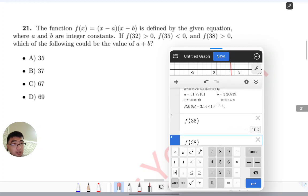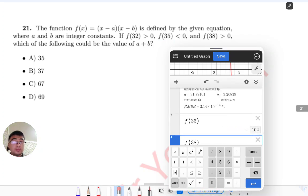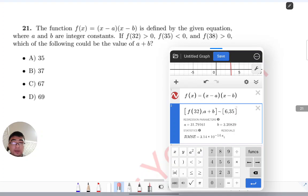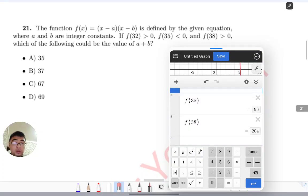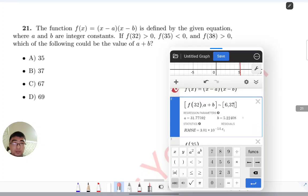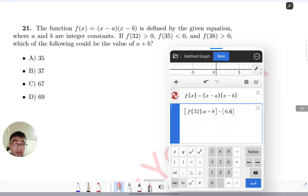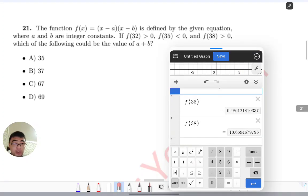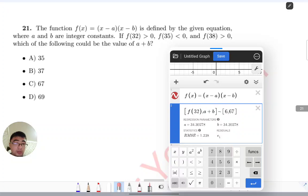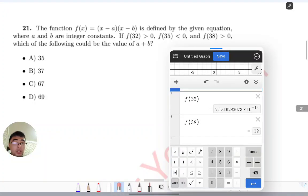f(38) is positive, but f(35) is not negative when it should be negative. Let's check option B: 37. Still doesn't satisfy us. 67, still does not satisfy. 69...